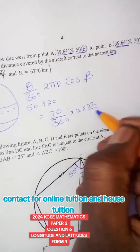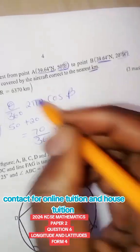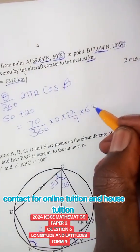Times 2 times 22 over 7 times the radius of the circle is given there at 6370 times cos of the constant angle 39.64.